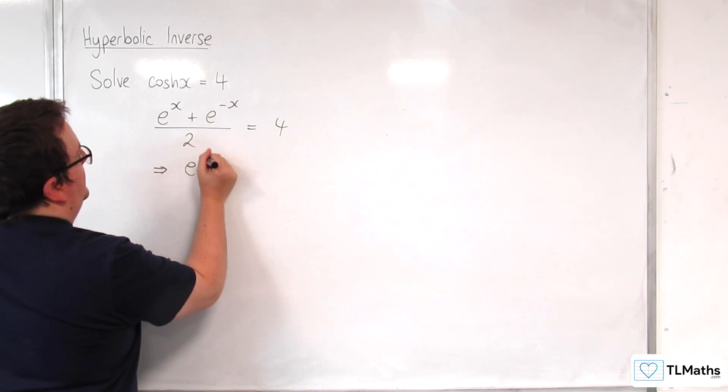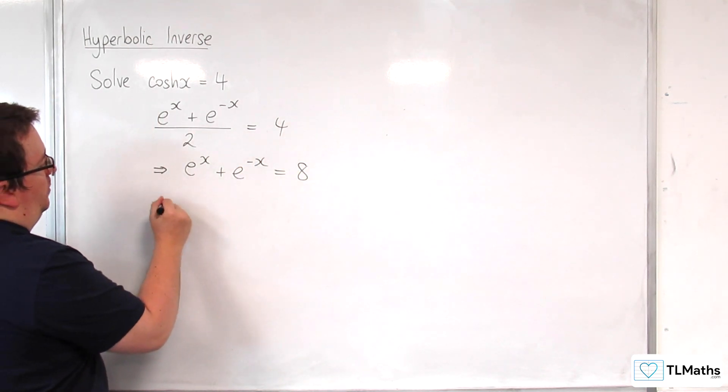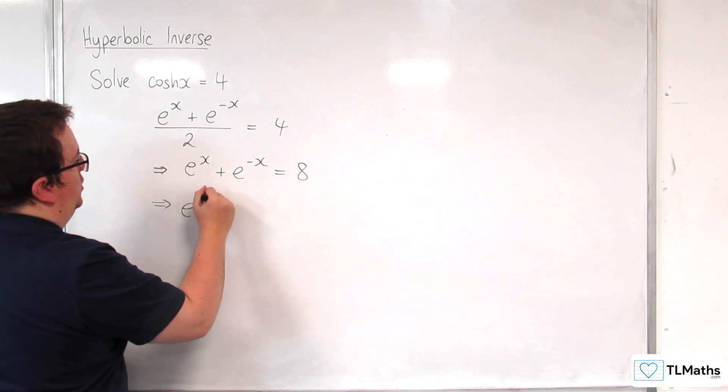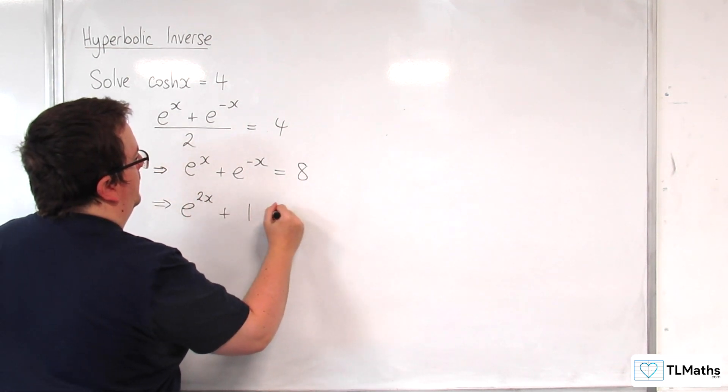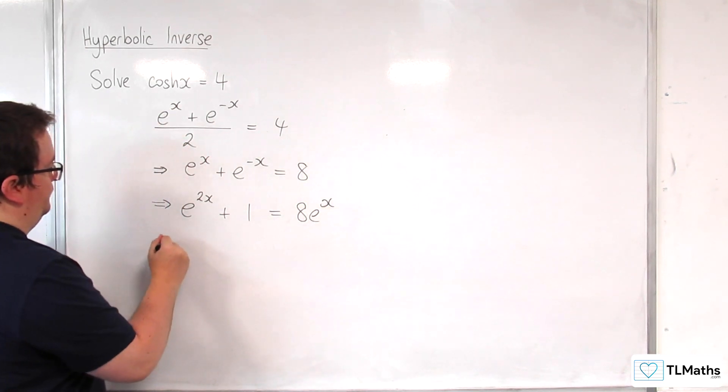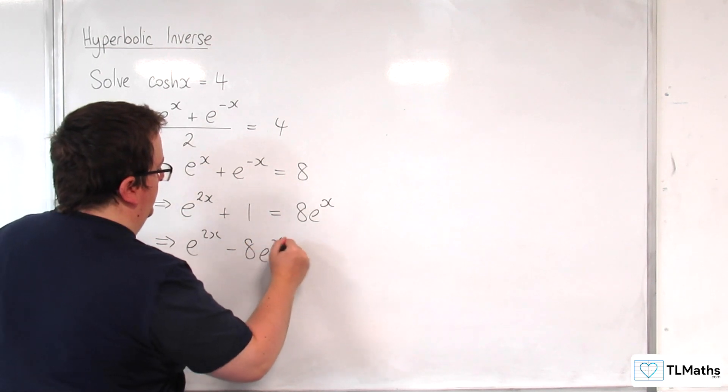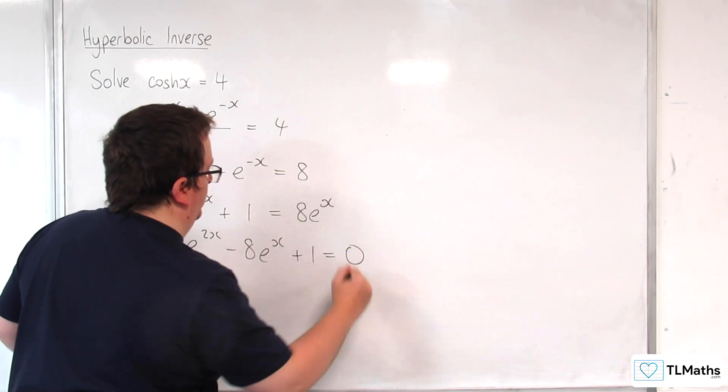So e to the x plus e to the minus x is equal to 8. Multiply through by e to the x, we get e to the 2x plus 1 is equal to 8 e to the x. So e to the 2x take away 8 e to the x plus 1 is equal to 0.